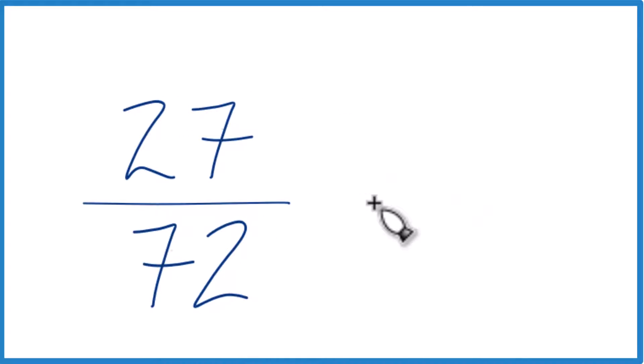27 divided by 9, that's 3. 72 divided by 9, that's 8. So I end up with 3/8. I can't simplify this any further, so this is the reduced or simplified fraction. 3/8 has the same value as 27 over 72.